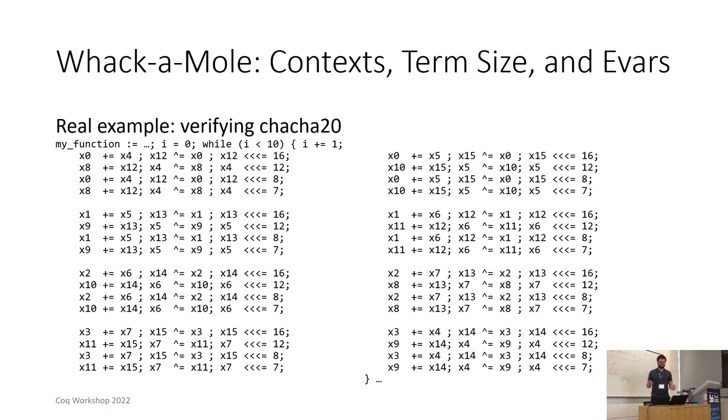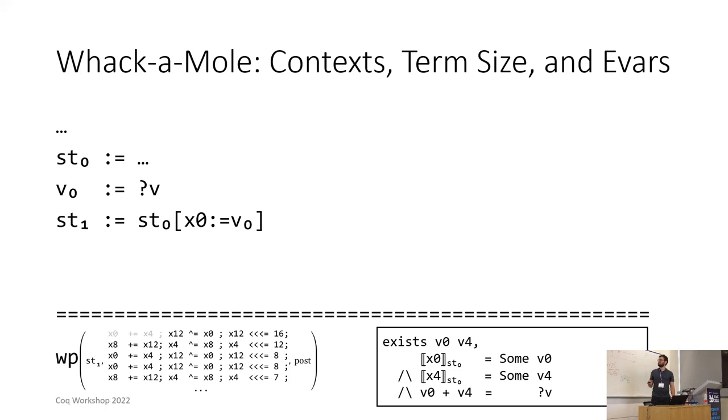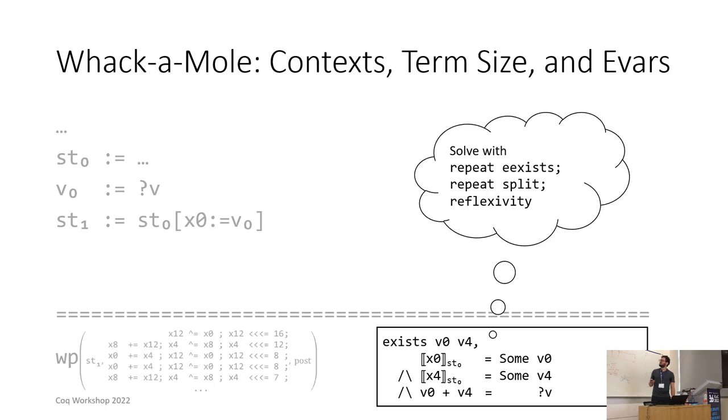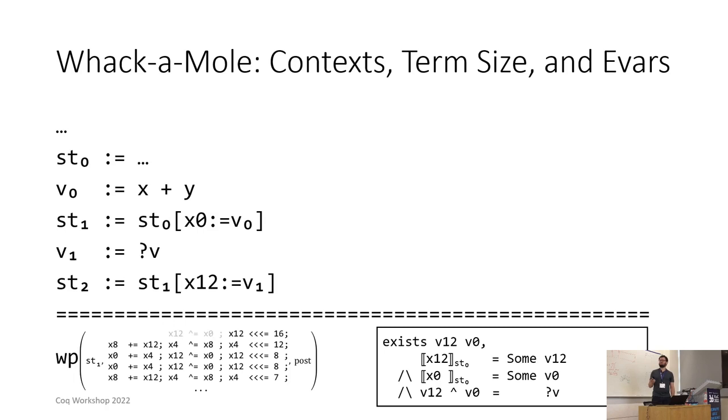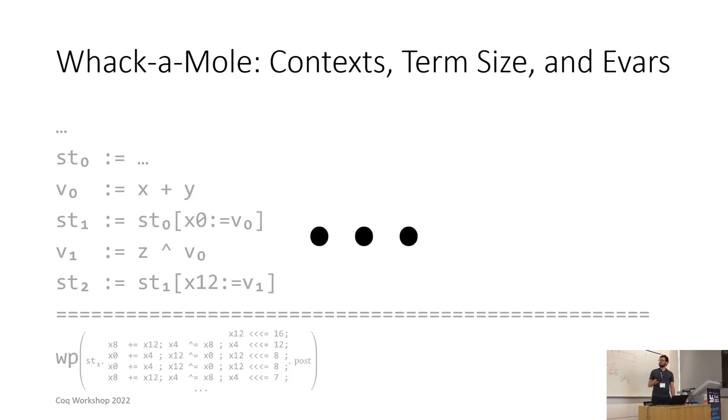The original proof here was contributed by J.M. Gerson. Andres, my co-author for this talk, spent a significant amount of time performance debugging it. The way that weakest precondition proving works is that you start with the first assignment and you introduce two let binders, one for the new value of the variable which is a pole, an existential variable here, and another one for the new state. The side condition can essentially be proven with repeat E exists, repeat split, reflexivity which instantiates the value of the variable and then you can strip off the next assignment and we do this 96 times.